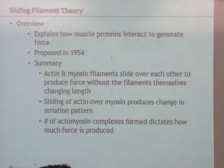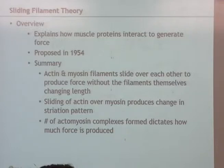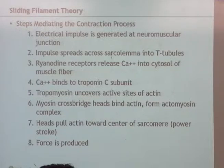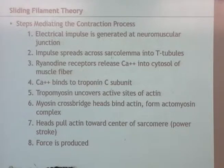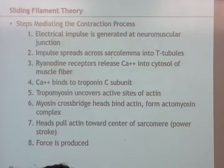The number of attachments between the myosin head and the actin filament dictates how much force is going to be produced. The more overlap, the more attachments the myosin can make, the bigger the force production. When the muscle is at rest, the myosin head can't attach to the actin filament — the active site is blocked off. It's covered up by the tropomyosin part of the actin filament, so we can't see cross-bridge formation at rest.